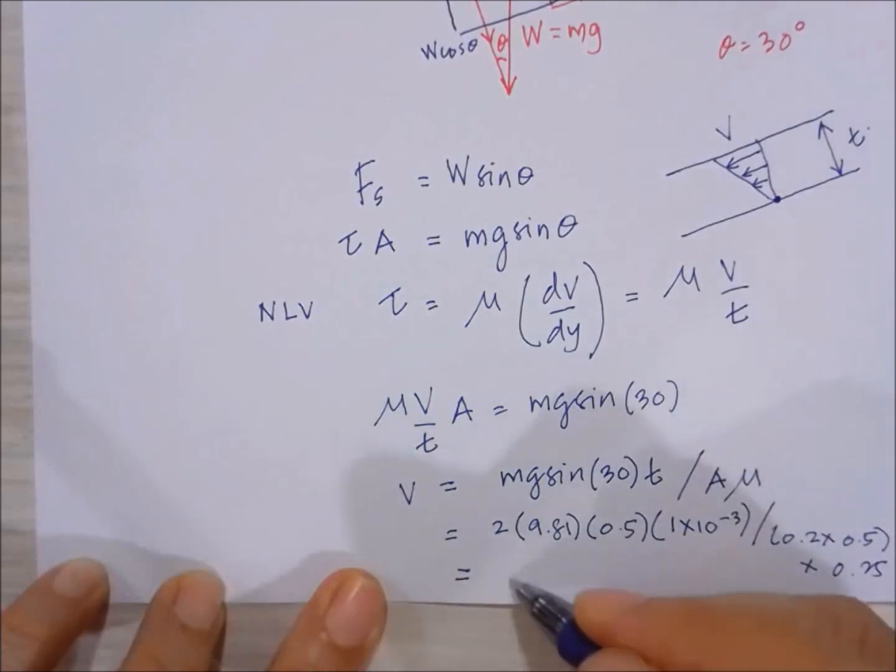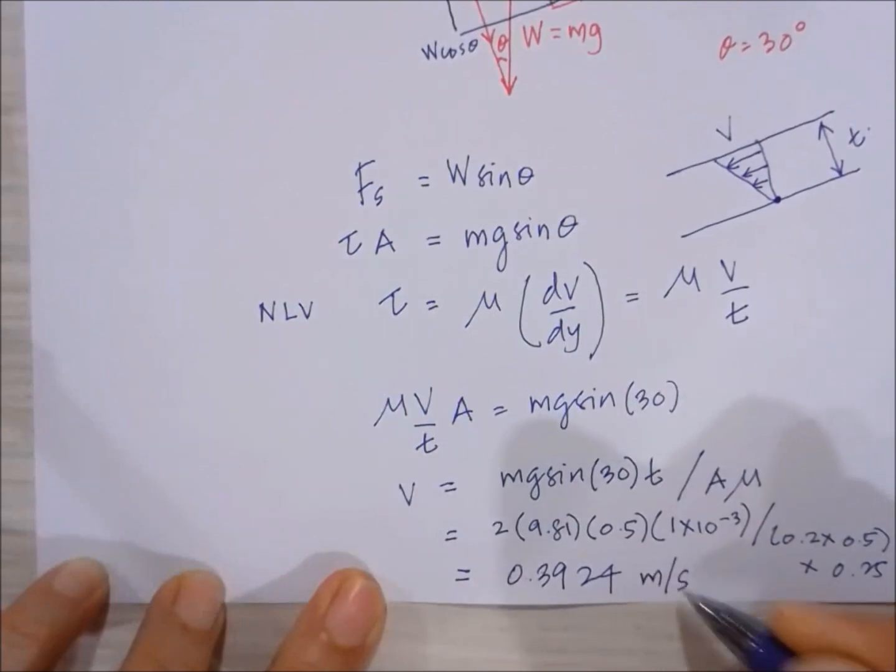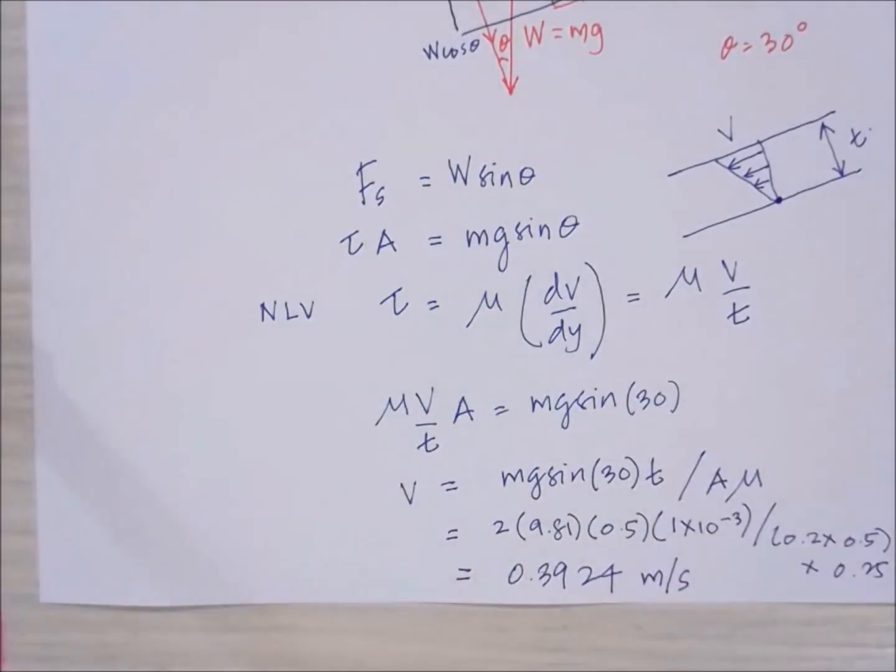So this will give us the value of 0.3924 meters per second.